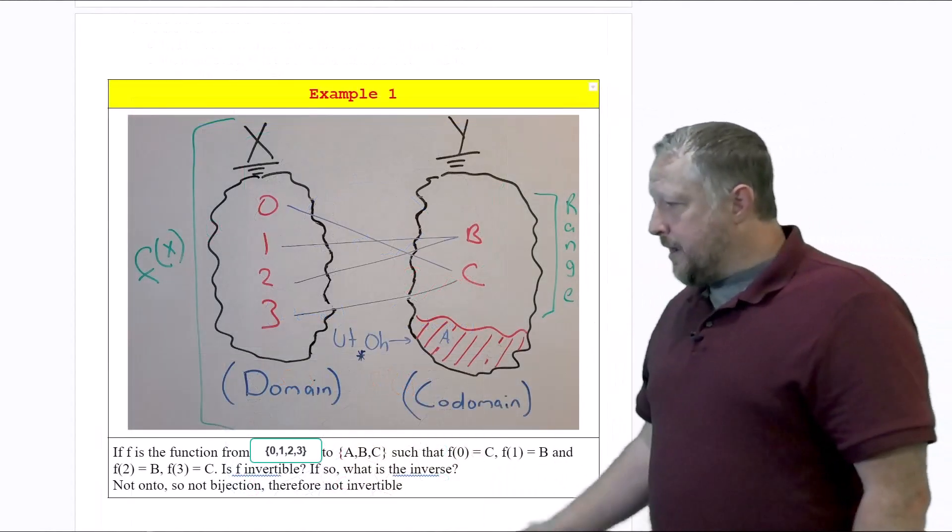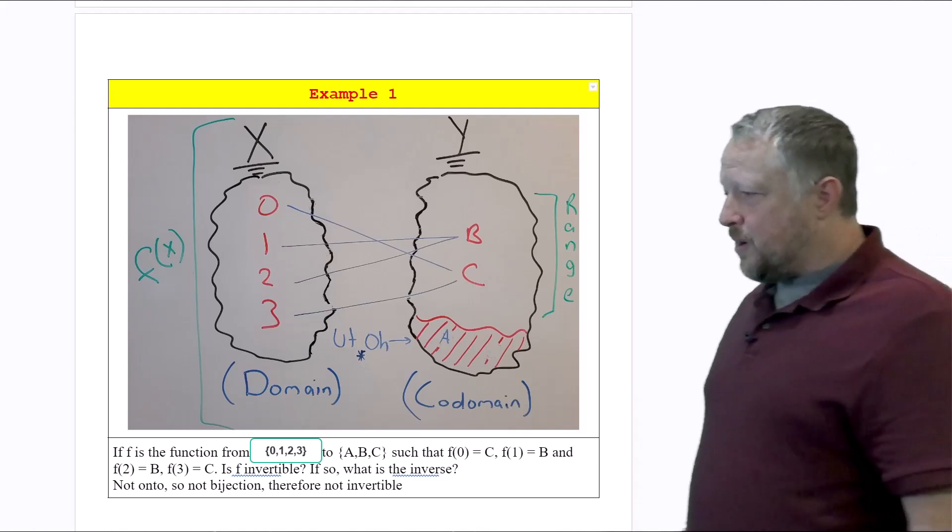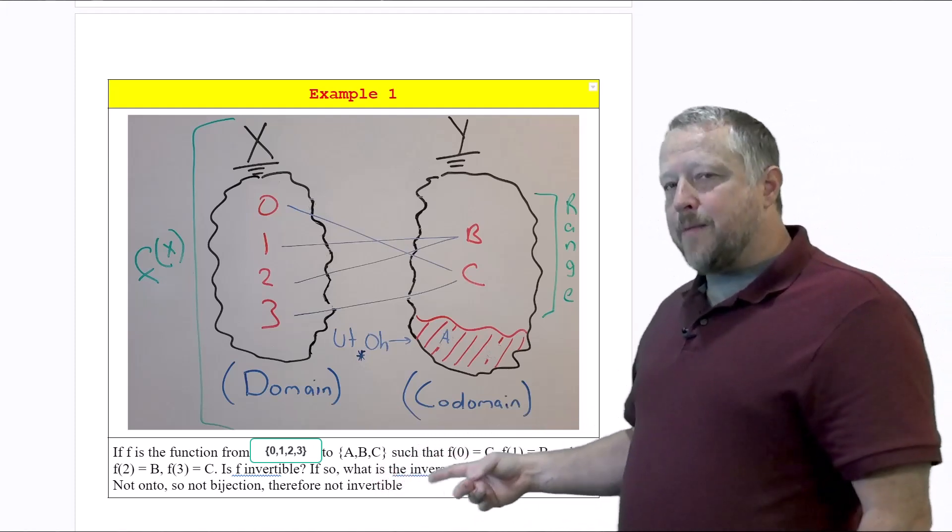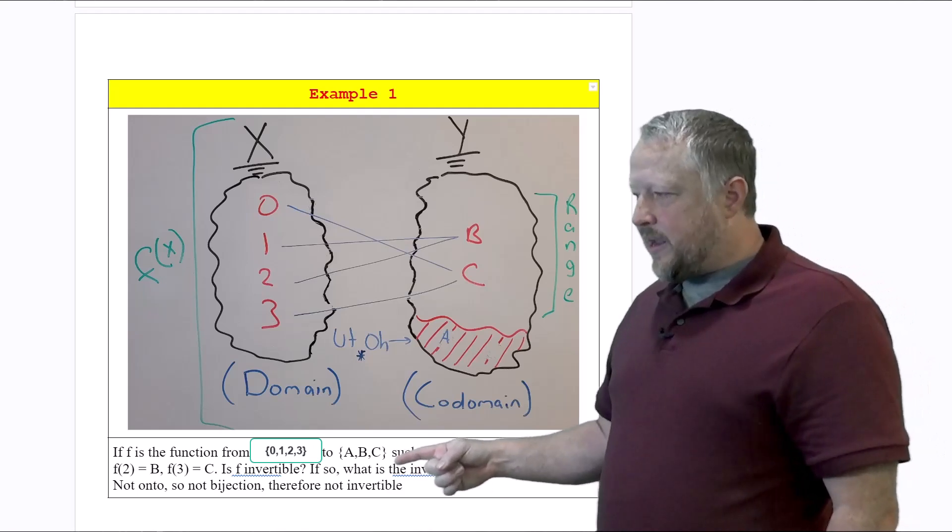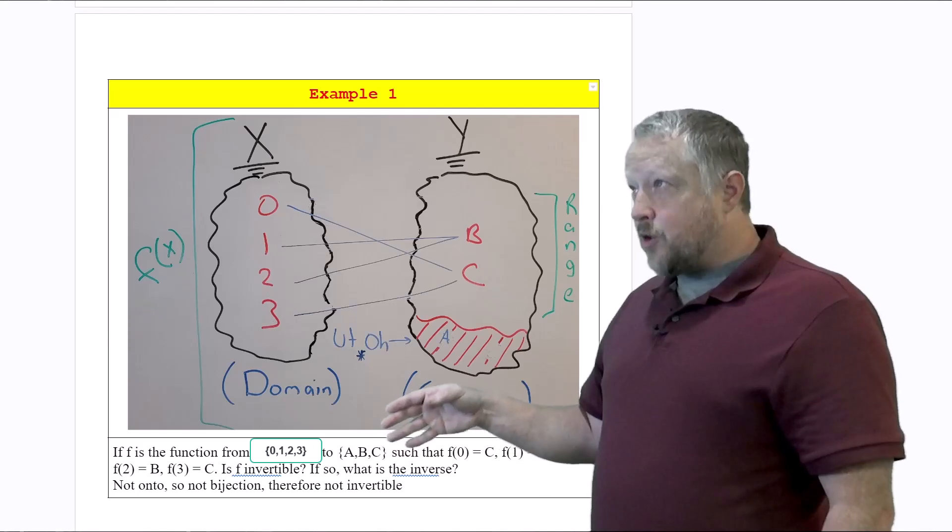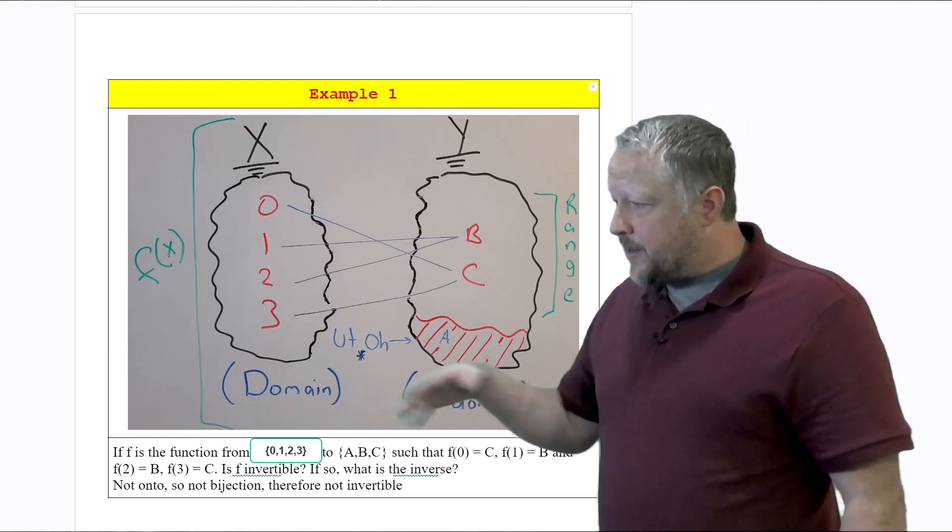Here's example number one, where f is a function from, notice a very explicit mapping everything out. Notice already, by the way, there's a dead giveaway here, because it doesn't have the same number of values in the codomain or range than our domain.